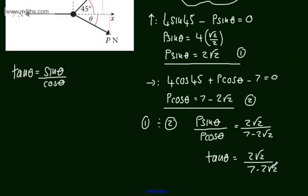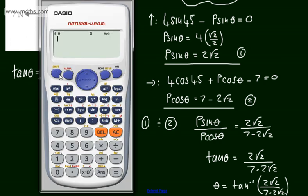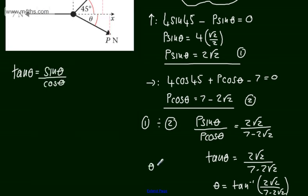So at this stage, all I have to do is evaluate this on a calculator. Theta will be equal to the inverse tan — tan to the minus 1 — of 2 root 2 over 7 minus 2 root 2. Make sure the calculator is in degrees mode. We'll find that value, and that gives us 34.1 degrees, correct to one decimal place. So theta is equal to 34.1 degrees to 1 d.p.